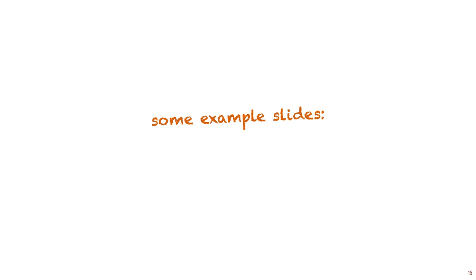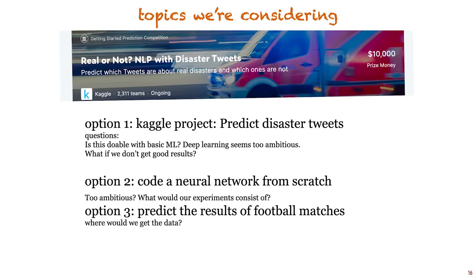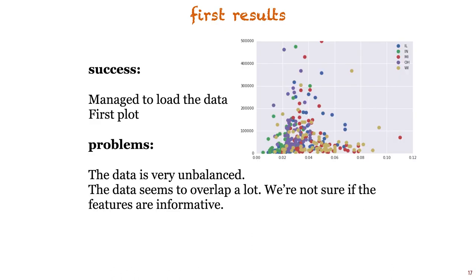People often find it difficult to figure out what to talk about in each session, so here are some examples of the sort of slides we expect. In the first week, you can introduce your group and discuss the topics you're considering. In the week after that, you may have managed some early data explorations for one of your candidate topics — copy-paste whatever you have onto the slides and discuss what you're stuck on. Help the TA to help you do some early troubleshooting. Problems like unbalanced data, missing values, or poor label quality are important to identify early.